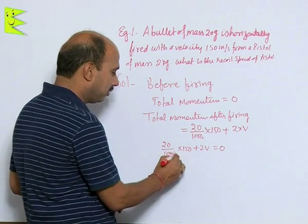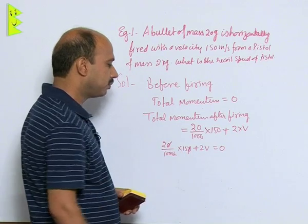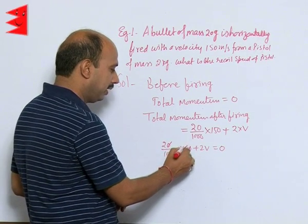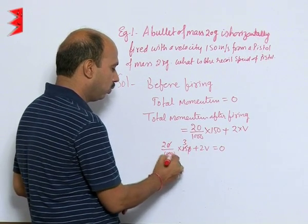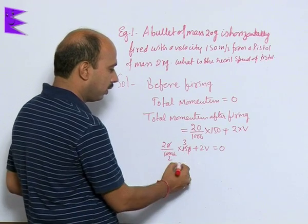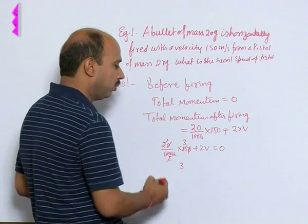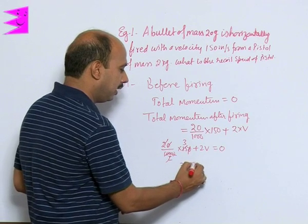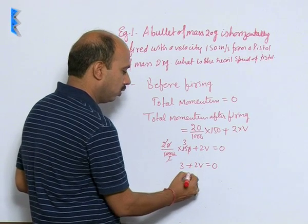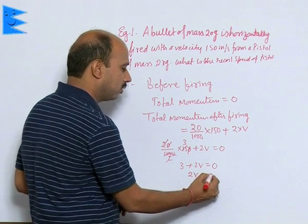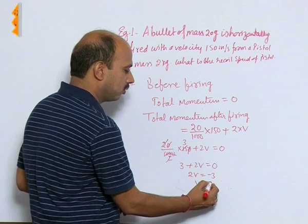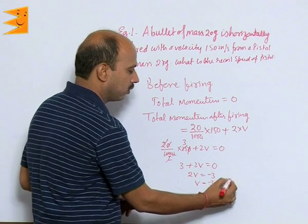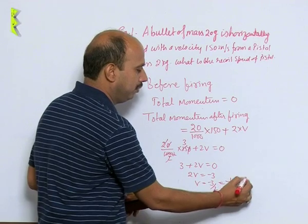We can cancel these two zeros and simplify: 3 + 2V = 0. So, 2V = -3, V = -3/2 = -1.5 meters per second.